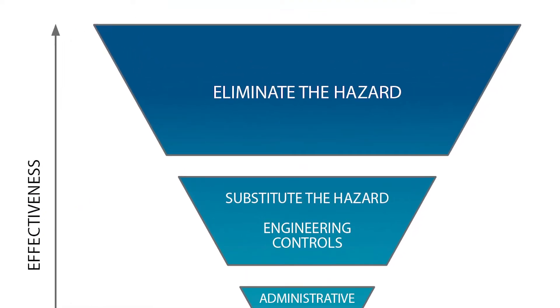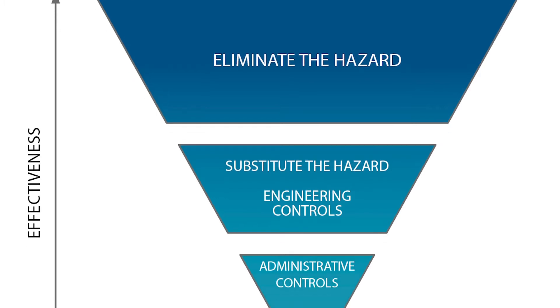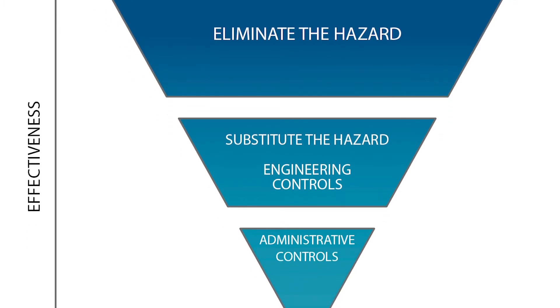The most effective control is to eliminate the hazard and any associated risks. The second most effective control is to substitute the source of the hazard with something safer, or to reduce the risk of the hazard with engineering controls.